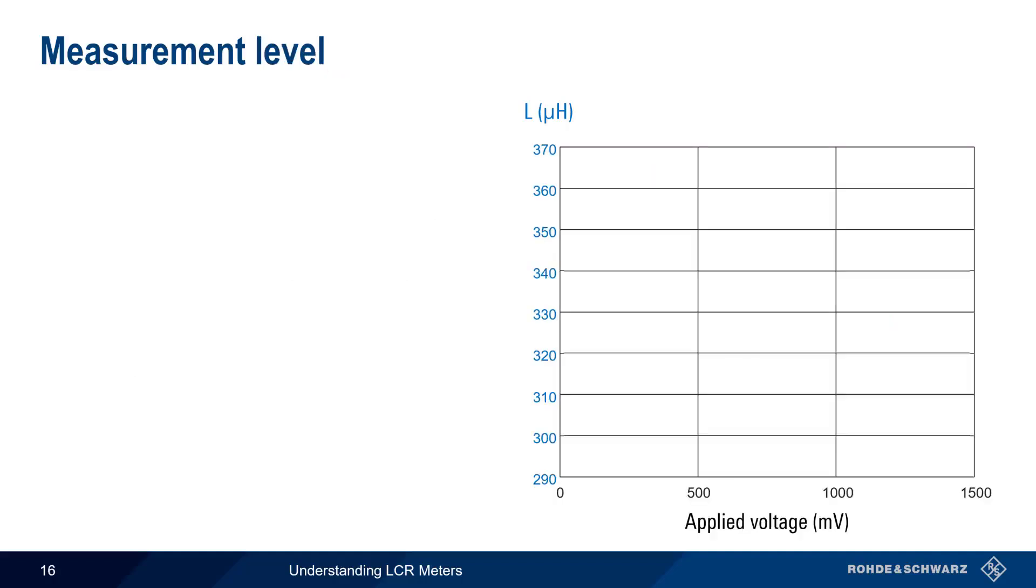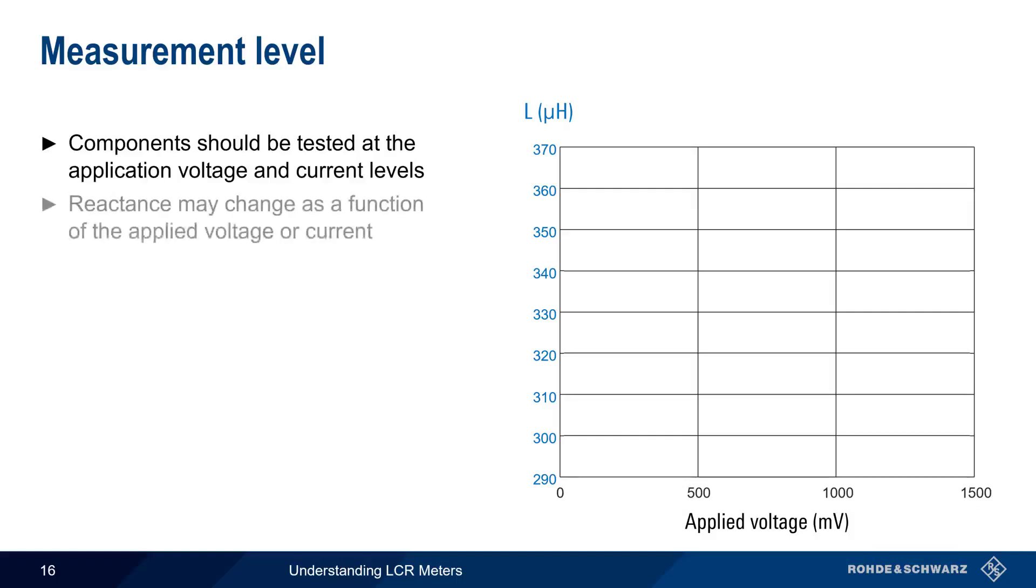Equally important is the level used in making measurements. Just as in the case of frequency, components should be tested at the voltage and current levels normally encountered in the intended application. This is because, in many cases, the reactants of a component may change depending on the level of voltage or current applied to it. It's also important to avoid excessive signal levels, since these can damage or destroy the component under test.